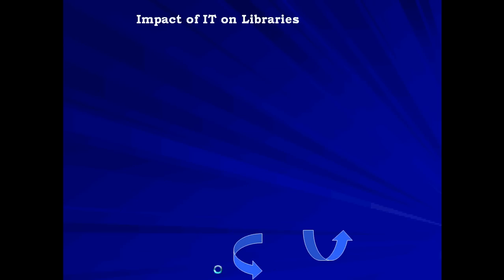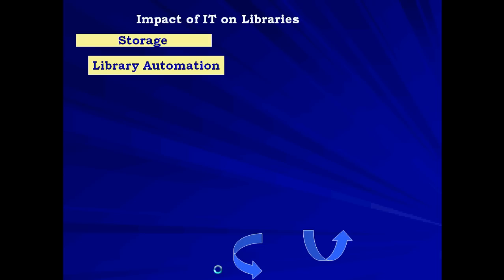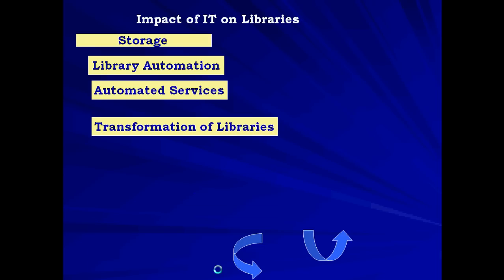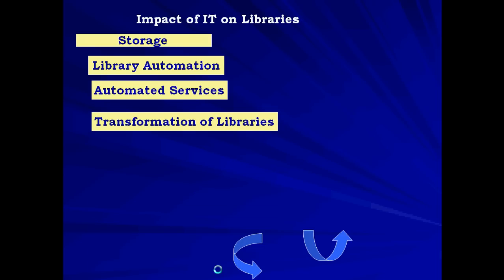Information and communication technology has influenced the libraries as well. The areas where the influence can be identified are storage media, library automation, automated services, and the transformation of libraries into modern libraries like electronic libraries, digital libraries and virtual libraries.